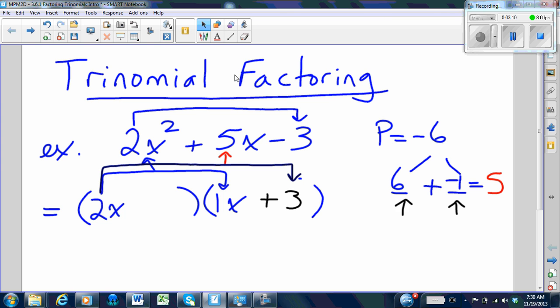And the 1x forms the interior or I part of FOIL. The interior terms have to multiply to something. And that would be the other number that we didn't use in the product and sum tree. We've only used the 6, therefore it has to be the negative 1. And 1 times negative 1 is equal to negative 1.